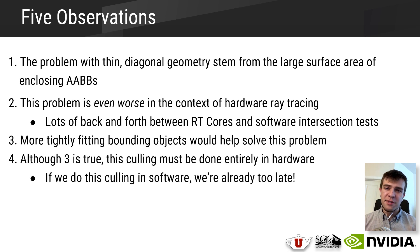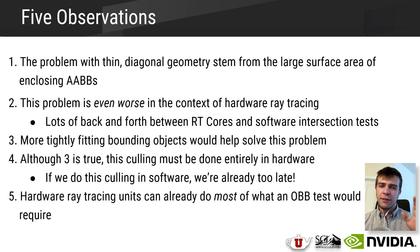The third observation is that more tightly fitting bounding objects would significantly reduce such failed tests. However, our fourth observation is while this is true, in practice, this additional culling only really matters if it can also be done in a hardware accelerated way. We don't want to be doing a custom culling test in software since switching from the RT core to software is exactly what we're trying to avoid in the first place here.